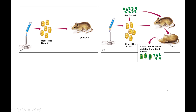Griffith's key experiment involved taking the virulent smooth strain and killing it with heat. The bacteria are dead, and when you put them into mice, the mice survive.